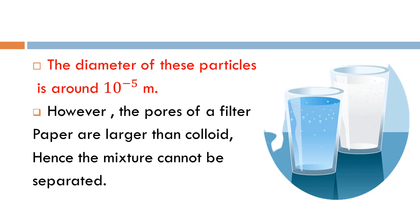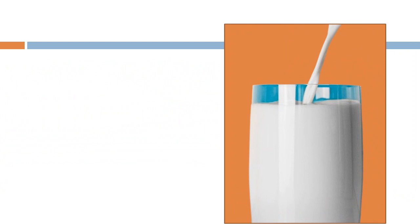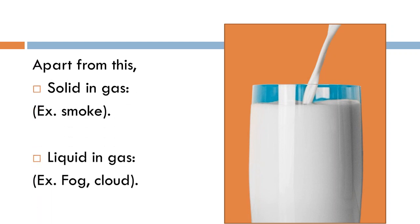Colloid particles are smaller than suspension particles. However, the pores of a filter paper are larger than colloid particles, so a colloidal mixture cannot be separated by filtration — all particles pass through. Colloids are of different types: solid in gas, for example smoke; and liquid in gas, for example fog and clouds.